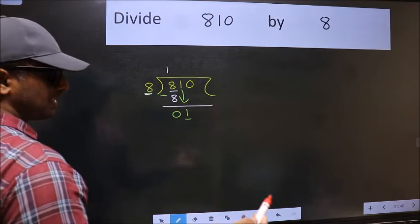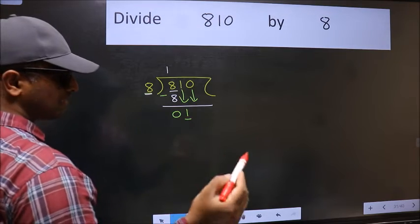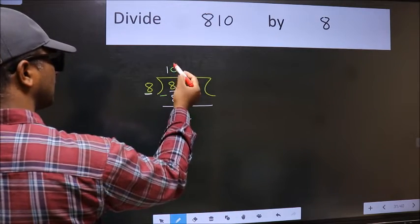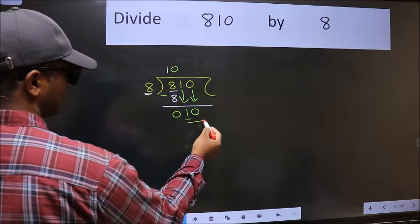So we should bring down the second number. And the rule to bring down the second number is we should put 0 here. Then only we can bring this number down. Now 10.